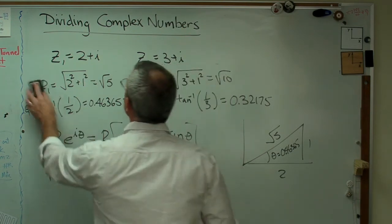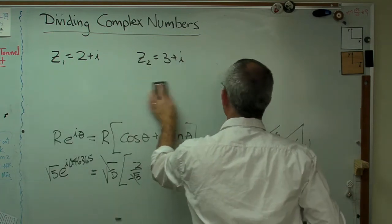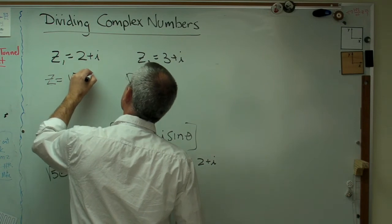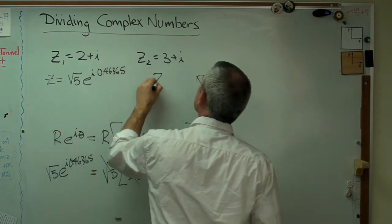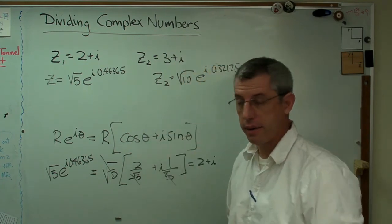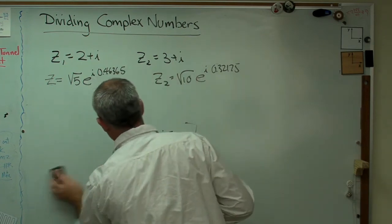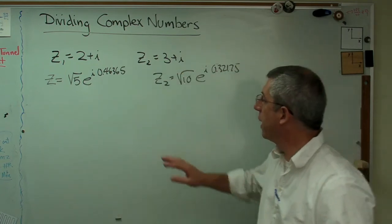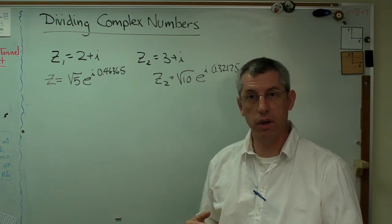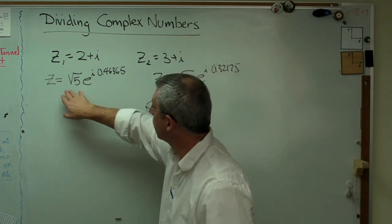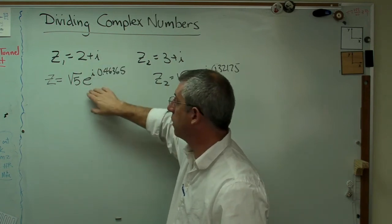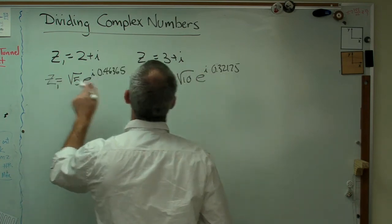And using the same method, z2 must equal square root of 10 times e to the i times 0.32175. So let's just backtrack here for a second and make sure everybody's on board. Started with that, started with that, divided the two. Shows you how to come up with an answer in rectangular coordinates. And now we're about to do the same thing in polar coordinates. But I want to show where that's coming from. So we turned this number into this one. These are exactly the same. It's just written out in a different format. Use the Euler relationship to make sure we know that's true.